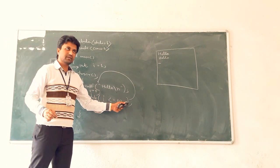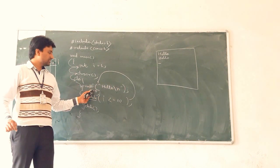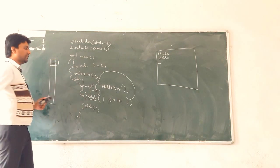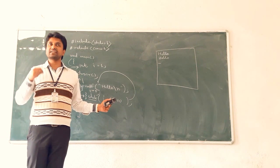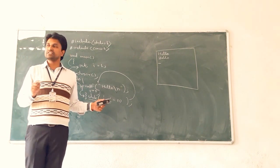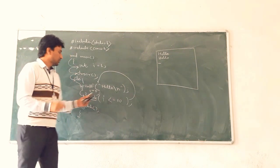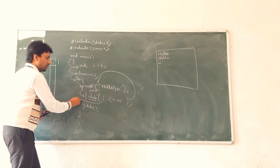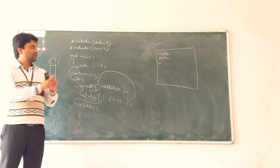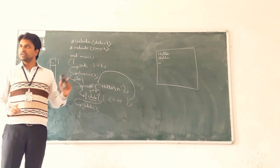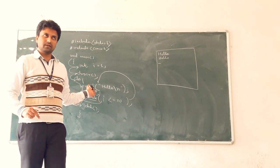And next is i++. At that time, value of i becomes 11. Now 11 less than or equal to 10 — condition false. At runtime, the condition returns value 0, so no entry to the do-while loop. Next statement executed is getch, which freezes the console. And 10 times you see the output: hello, hello, hello — 10 times.